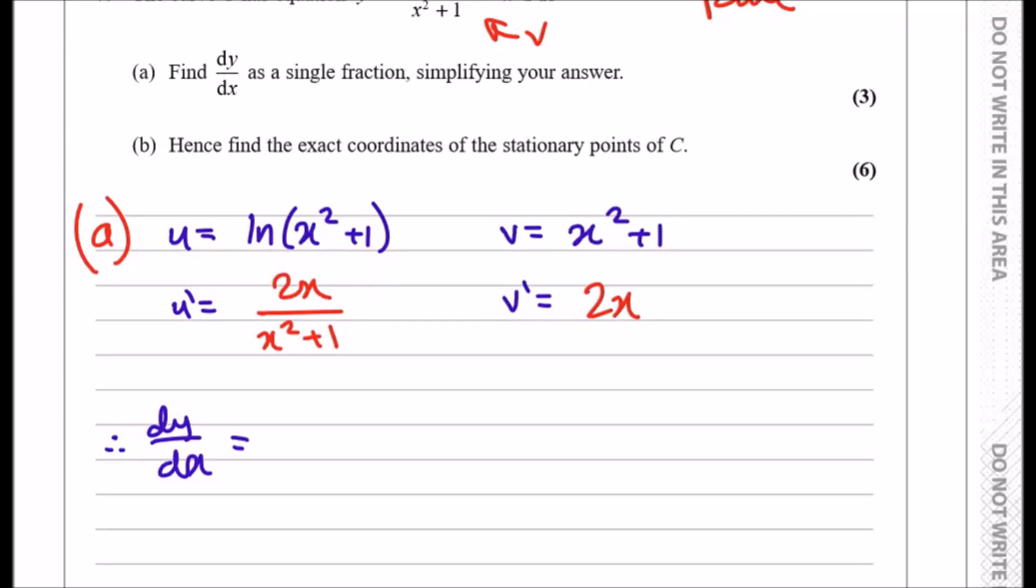Now the quotient rule tells us that we pick the v, smash against the u prime by multiplying, and take the u, multiply against v prime, and then divide all of this by v squared. So let's do v times u prime. You've got x squared plus one times this side, and you notice if you multiply this you can actually cancel down x squared plus ones, so you're left with just 2x.